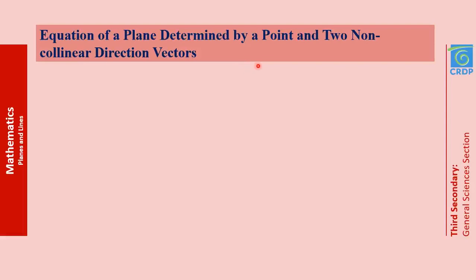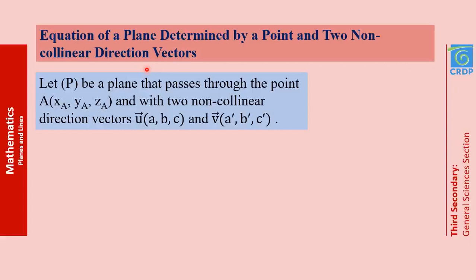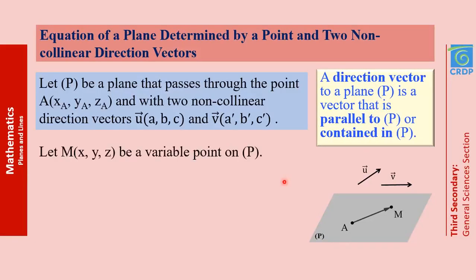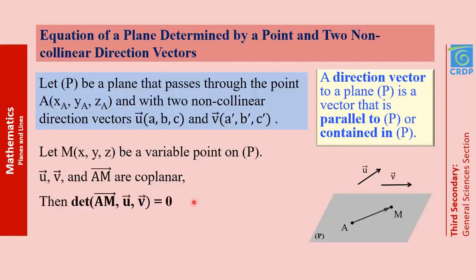Now, the equation of a plane determined by a point and two non-collinear direction vectors. P is a plane that passes through point A with two non-collinear direction vectors U and V. A direction vector to a plane is a vector which is either parallel to the plane or contained in it. Let M be a variable point on the plane. The three vectors U, V, and AM are coplanar, so the determinant |AM, U, V| = 0, or equivalently AM · (U × V) = 0.